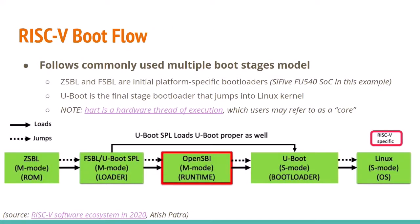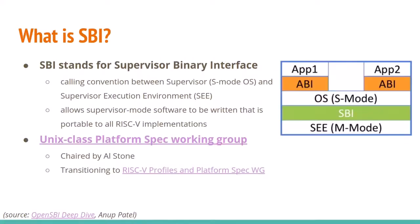The RISC-V boot flow is similar to ARM: you have the zero-stage bootloader in the SoC ROM, then a small first-stage bootloader, then U-Boot as the final-stage bootloader that jumps into Linux. Something you might not be familiar with is OpenSBI. SBI stands for Supervisor Binary Interface — it's specific to RISC-V. It's the calling convention between the supervisor-mode OS (like the Linux kernel) and the supervisor execution environment (bare metal code in M mode), allowing supervisor-mode software to be portable across all RISC-V implementations.